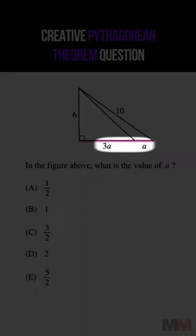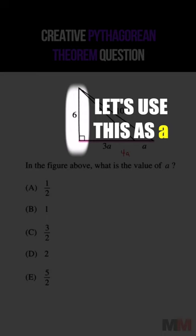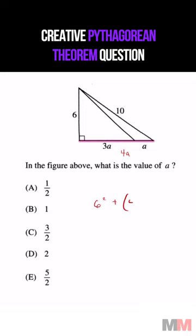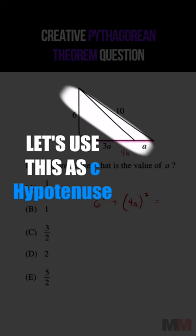So since this is a right triangle, we can state that A squared, which is going to be that length, plus B squared, and we could just choose the base as my B. So that's 4A squared in parentheses equals 10 squared.